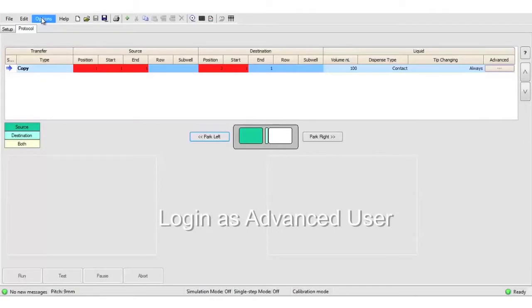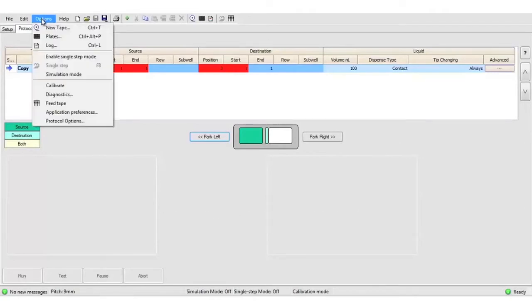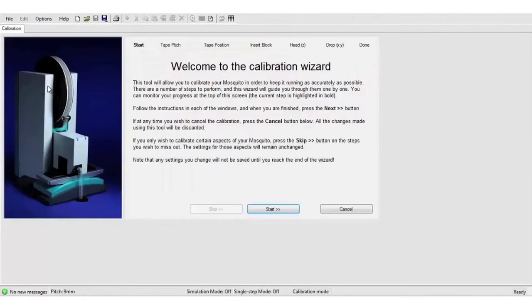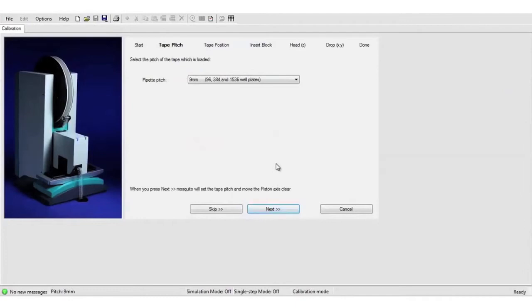To open the calibration wizard, we go to options, calibrate. Now there's a step-by-step guide of how to calibrate. Choose the pitch of tape we're actually using, which is 9mm, and click next.